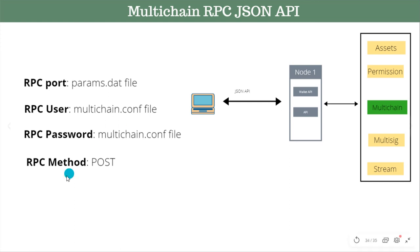I will show you in the hands-on where to locate the multichain.conf file and how the username and password look. The HTTP method you use to call this REST API will always be POST — whether you are getting some information, doing a query, or inserting something, the method is always POST. So these four parameters you need to have handy before you start making the actual REST API call to MultiChain.